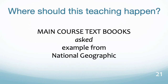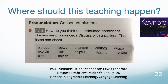Where should this teaching happen in main course textbooks? Let's consider an example of what we learn about the sound shape of the word spelt A-S-K-E-D. I've taken this example from a National Geographic publication — their Keynote series — specifically from Keynote Proficient, the pronunciation section on consonant clusters. The instruction reads: 'How do you think the underlined consonant clusters are pronounced? Discuss with a partner, then listen and check.'